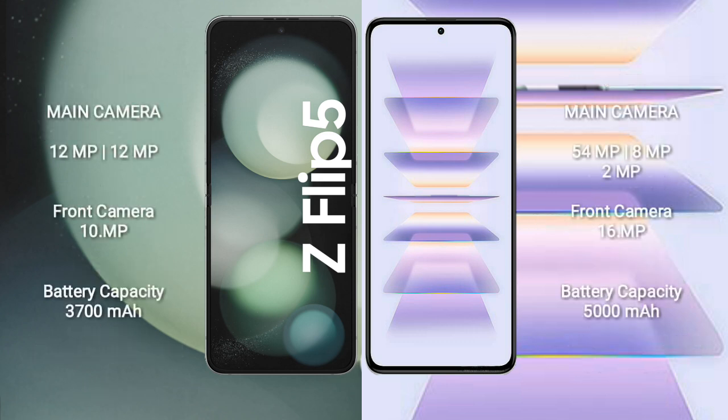Redmi K60 Pro comes with 8GB and 12GB RAM options, with 256GB internal storage, powered by the Qualcomm Snapdragon 8 Gen 2 processor and Adreno 740 GPU.